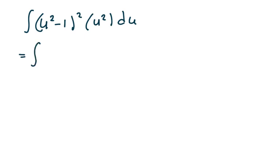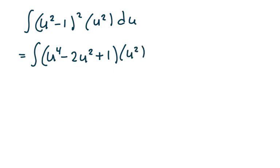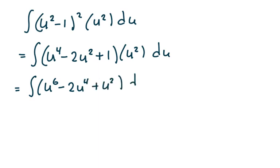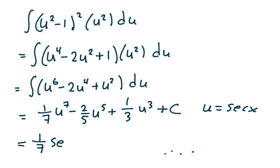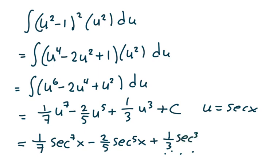I square out u squared minus 1 to get u to the fourth minus 2u squared plus 1, and multiply by u squared du. Distributing the u squared in gives u to the sixth minus 2u to the fourth plus u squared du. So this integrates to one-seventh u to the seventh minus two-fifths u to the fifth plus one-third u cubed plus c. Since u is secant x, the answer is one-seventh secant to the seventh x minus two-fifths secant to the fifth x plus one-third secant cubed x plus c.